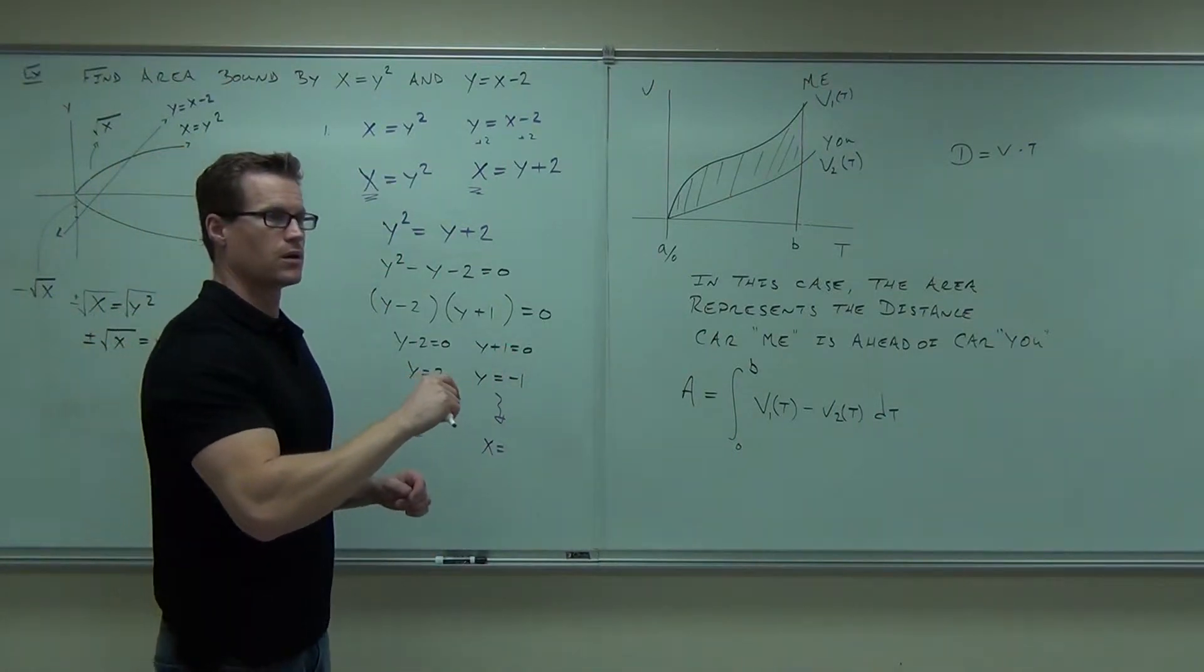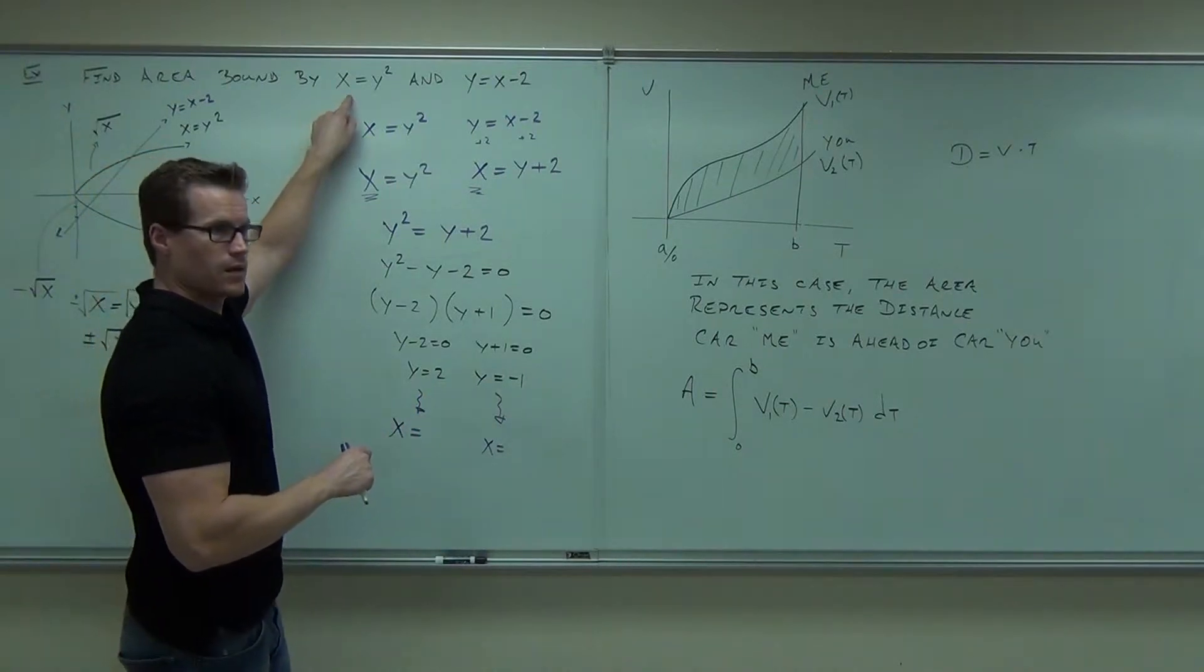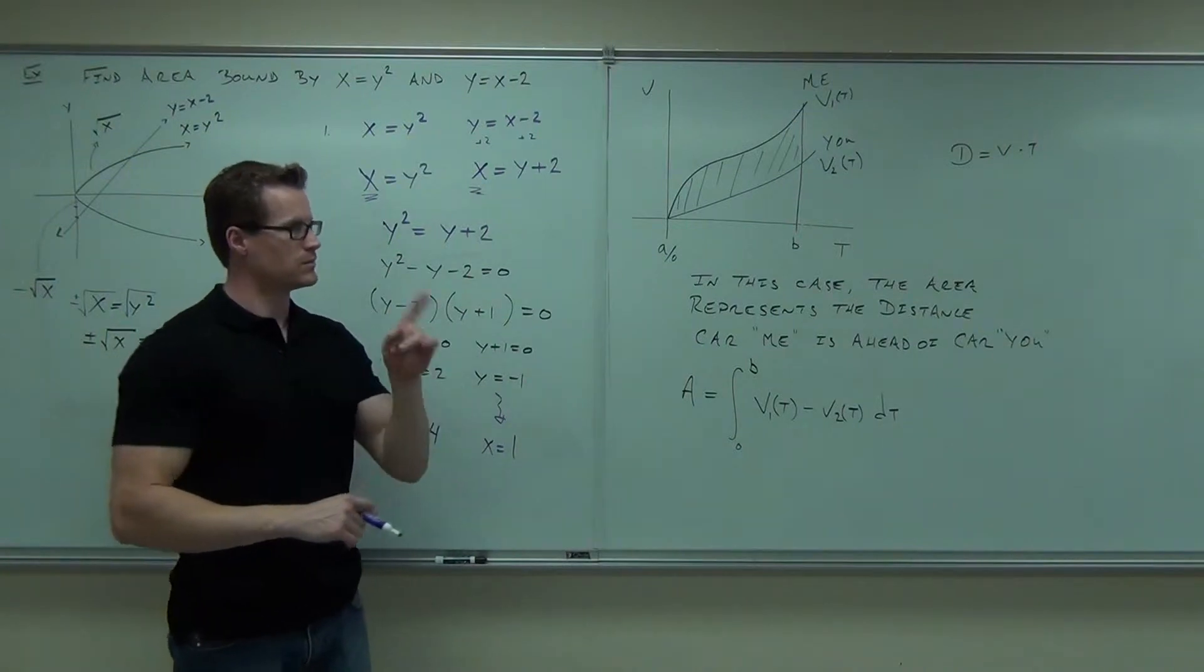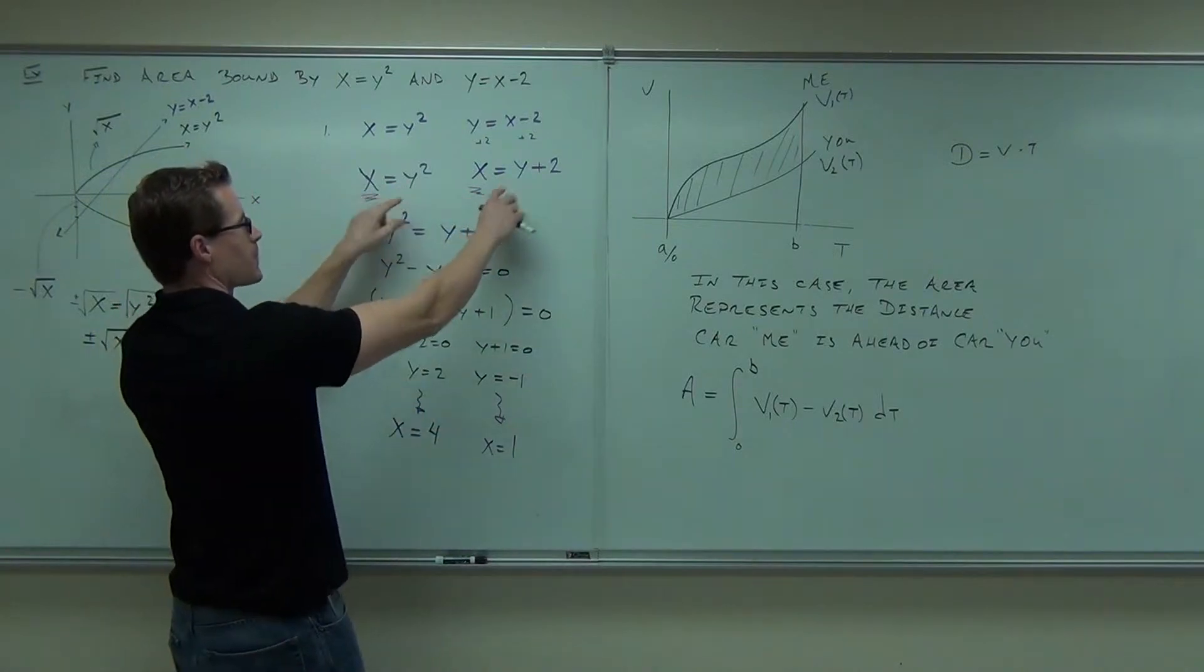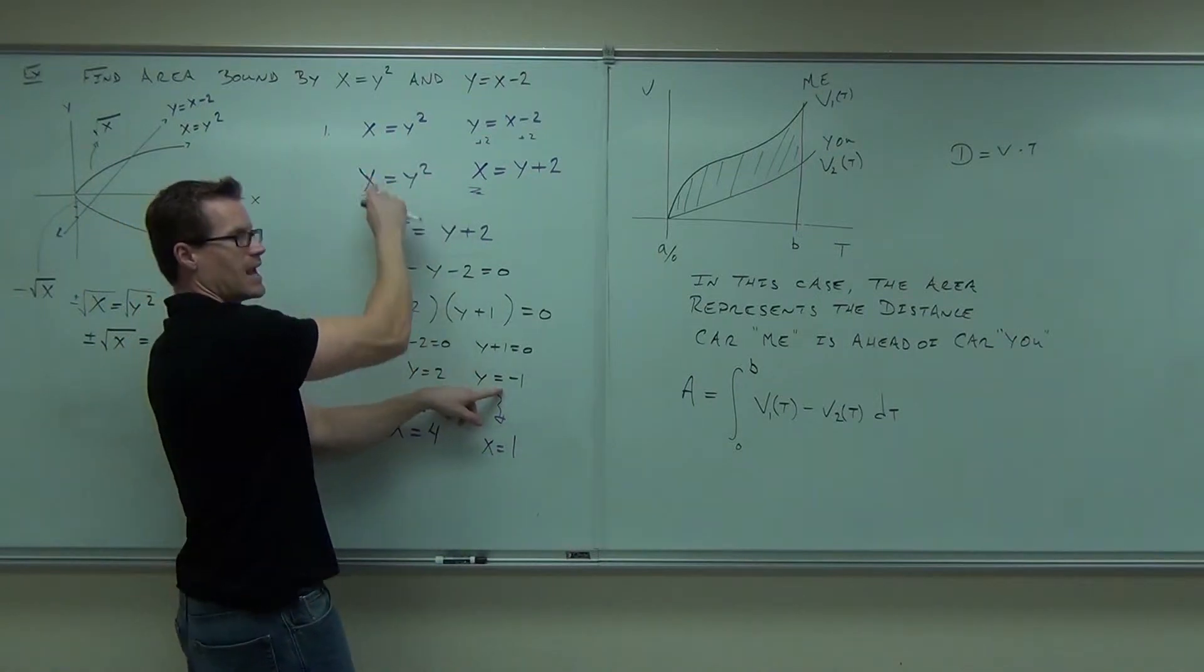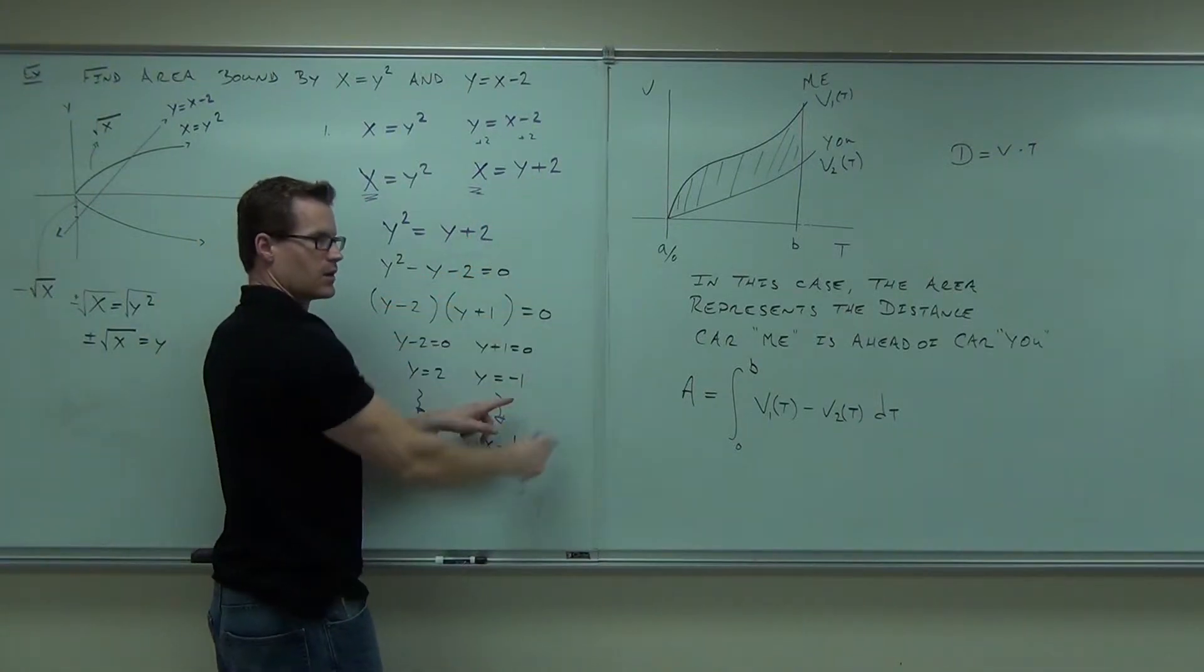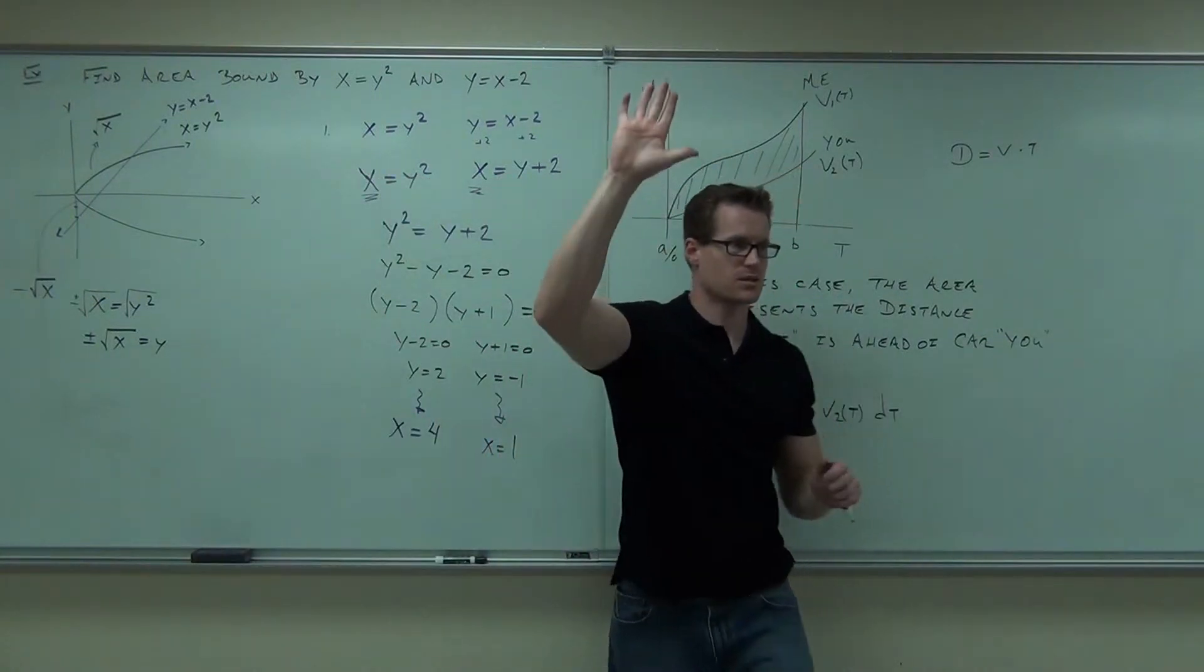How did you get four and one? X equals y squared, I'm just looking at it. Plug in two and that equals four, then the same thing with negative one, that equals one. Perfect. Exactly right. So either one of these things, if I plug in y equals 2, x is 4. Plug in y equals negative 1, x is 1. You get me on that? It has to work, because you said I'm equal, but that has to be the case.